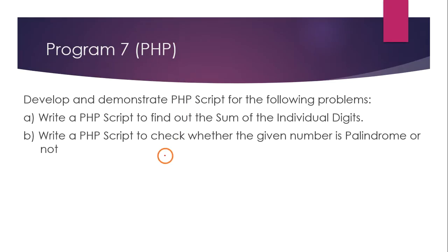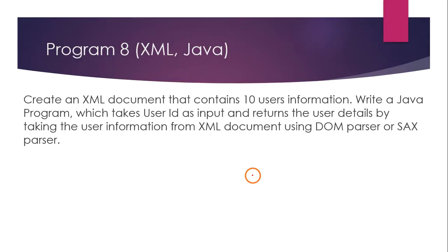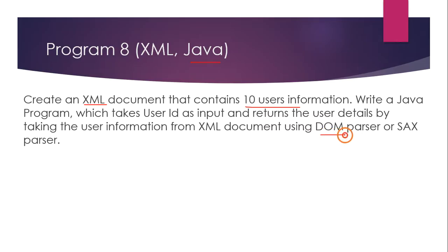Program seven introduces PHP: it takes a number and displays the sum of its individual digits, and also determines whether the given number is a palindrome. Program eight uses XML as a data representation format to store information of ten users, and uses Java with either a DOM parser or SAX parser to retrieve data from the XML file and display it on screen.